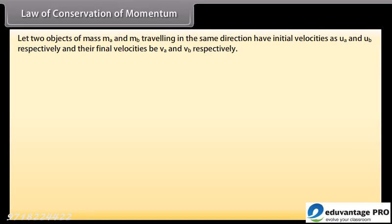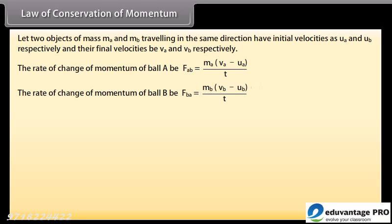Let two objects of mass M-A and M-B traveling in the same direction have initial velocities as U-A and U-B respectively, and their final velocities be V-A and V-B respectively. The rate of change of momentum of ball A is F-AB, which is equal to M-A into V-A minus U-A upon T. The rate of change of momentum of ball B is F-B-A, equal to M-B into V-B minus U-B upon T.